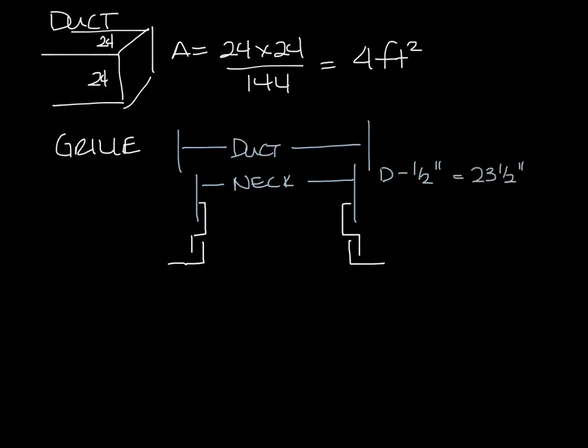So the neck area is 23 and a half times 23 and a half divided by 144, which is 3.84 square feet.